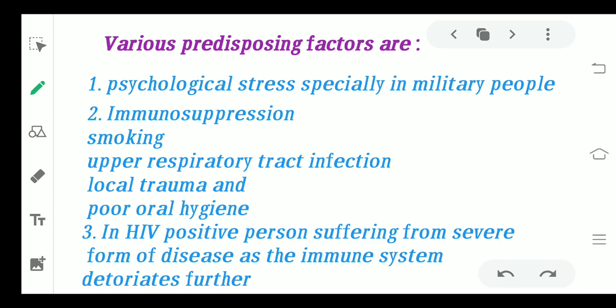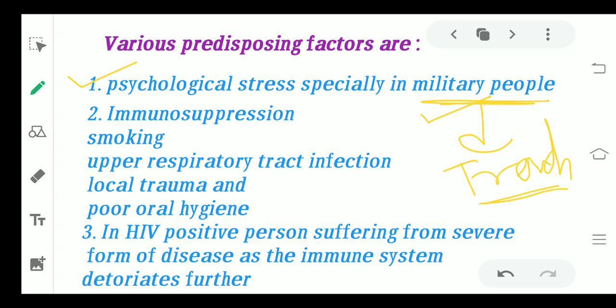What are the various factors which can lead to the overgrowth? There can be certain psychological stress, especially in military people. Those people who are in the military, in the trench areas, do not get much time to take care of their oral hygiene and oral health, so gingivitis can be seen in these people — hence it is also called the trench mouth. Another factor is immunosuppression — any person having any kind of disease, whether that is HIV or anything, due to which the immune system is being suppressed, that is another predisposing factor.